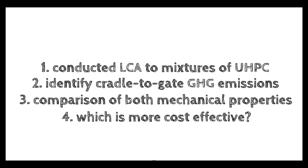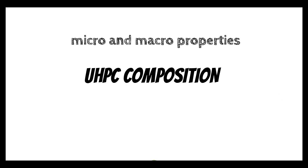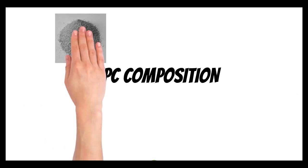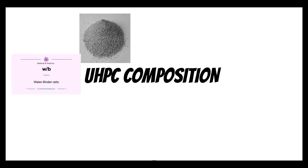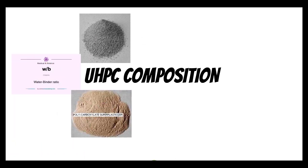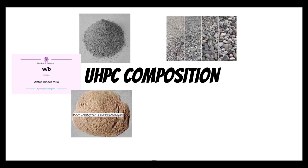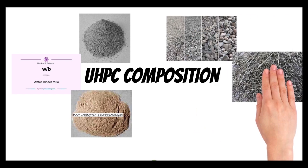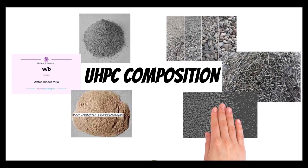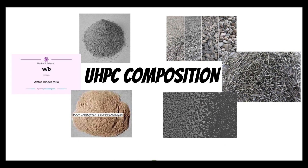Let's talk about the UHPC composition. The key factor in producing UHPC is to improve the micro and macro properties of its mixture ingredients. There are six main compositions of UHPC: the binders, water-binder ratio, superplasticizers, aggregates, steel fibers, and nanomaterials.